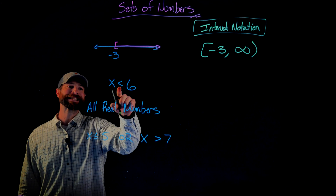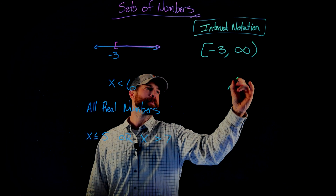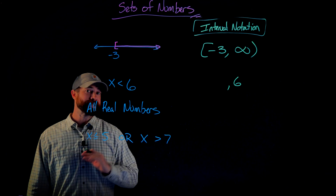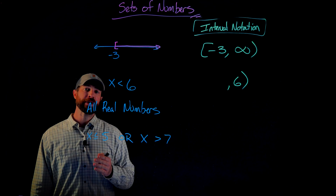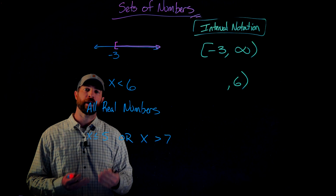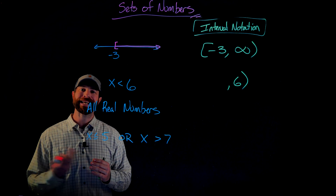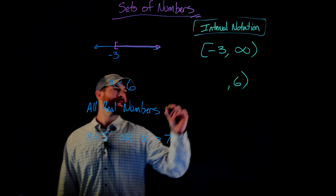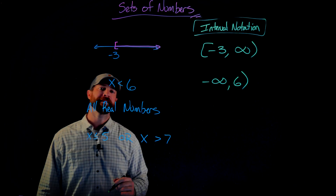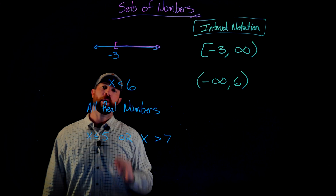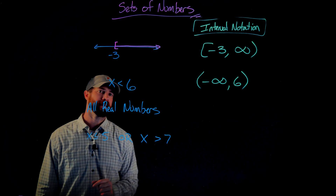In the next example, x is less than 6, so 6 is the upper bound and it's not included in the set. As in the previous example, there is no lower bound — we're told there are numbers less than 6 but there's no least stopping point. When we don't have a lower bound, we write a negative infinity symbol in that position, and we always put a parenthesis around negative infinity or positive infinity.